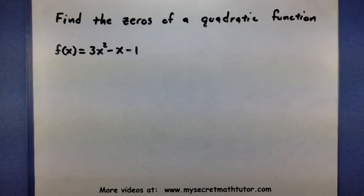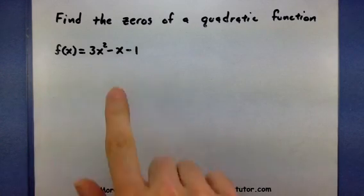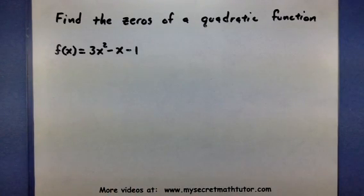Welcome to My Secret Math Tutor. In this video, we want to find the zeros of a quadratic function. The function I've picked for this one is f(x) equals 3x squared minus x minus 1.